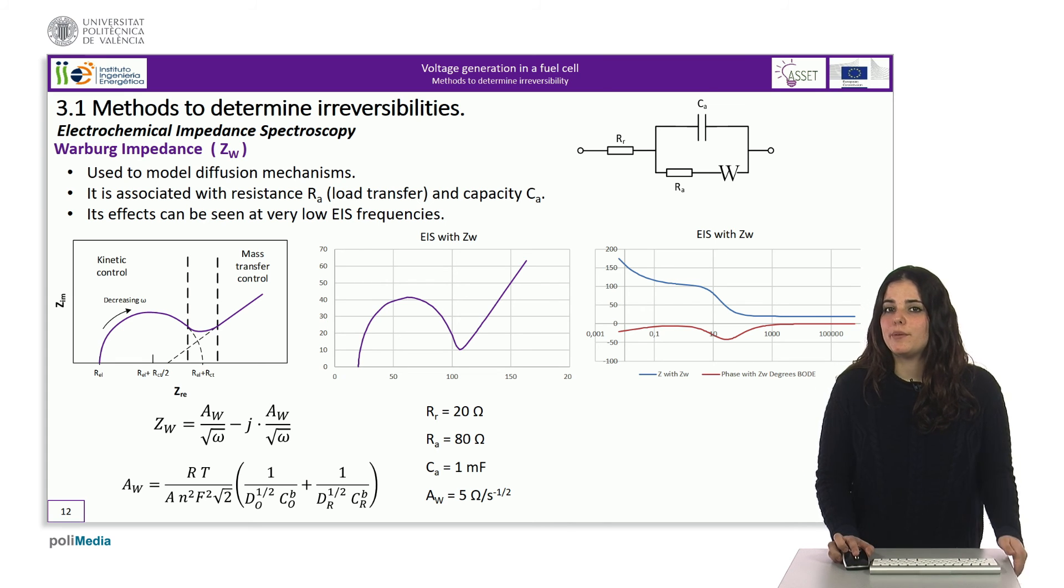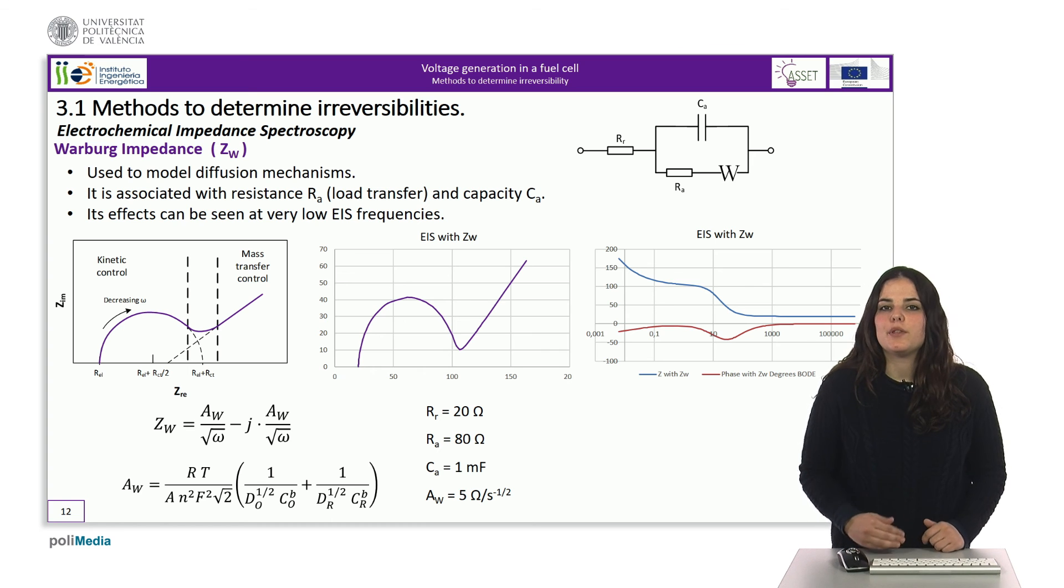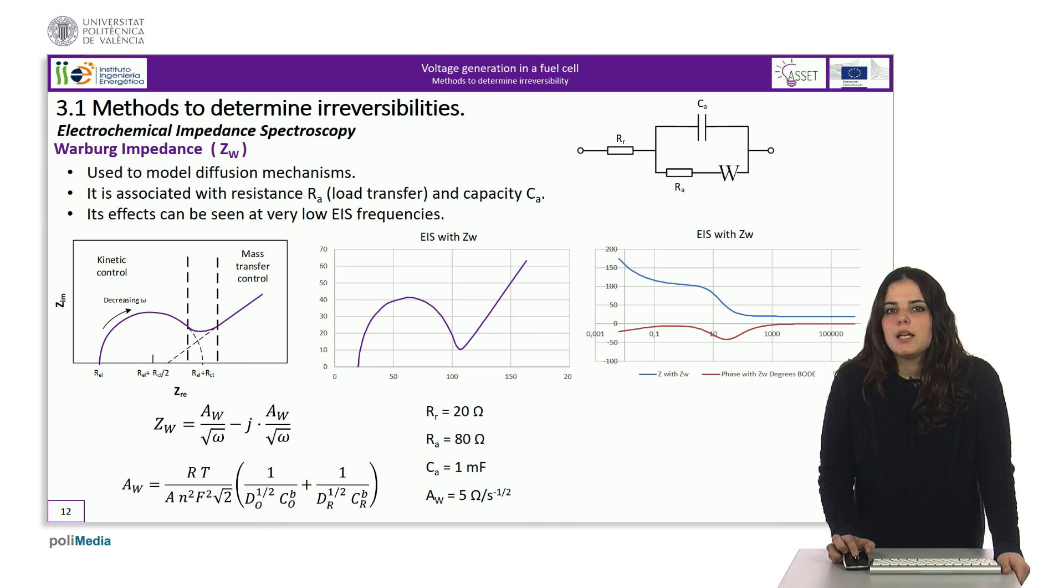In our example, from the Bode diagram, we obtained that for a pulse of 0.01256 radians, the modulus of the impedance is 151.35 ohms, and from there we can calculate an A W of a value of 5.0001 ohms per seconds to the power of 0.5. A W is related to the diffusion coefficient D and the concentration C of the oxidant O and the reducer R, as we can see in this equation.